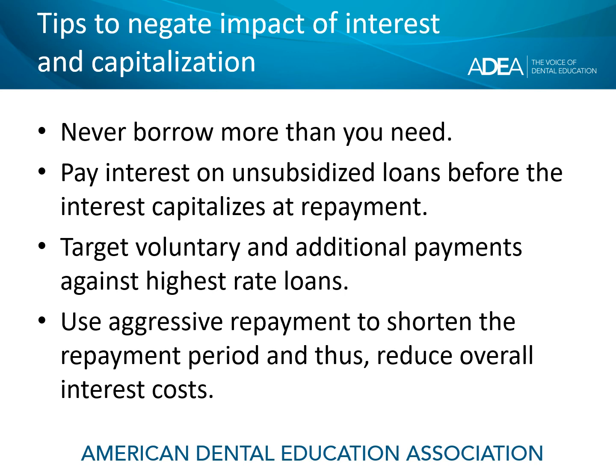If at all possible, pay the interest or some of the interest on your unsubsidized loans before it capitalizes at repayment — that will certainly help keep the total repayment cost down. Target any voluntary and additional payments on your student loans against the highest interest rate loans in your student loan portfolio.